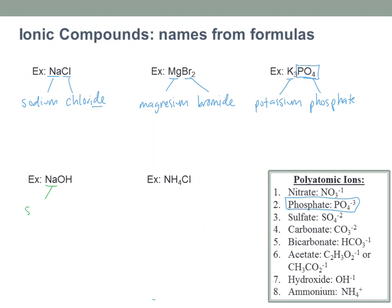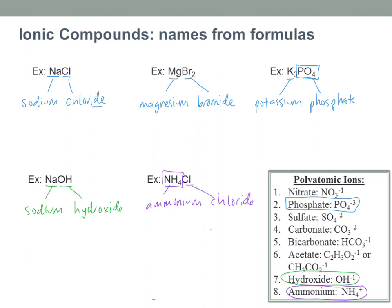NaOH: Na is sodium. OH is another common one where people try to say 'hydrogen oxide,' but you want to recognize that OH is called hydroxide. So this would be sodium hydroxide. And then NH₄Cl: if you know your polyatomic ions, NH₄ is called ammonium, and chlorine becomes chloride — so that's ammonium chloride.